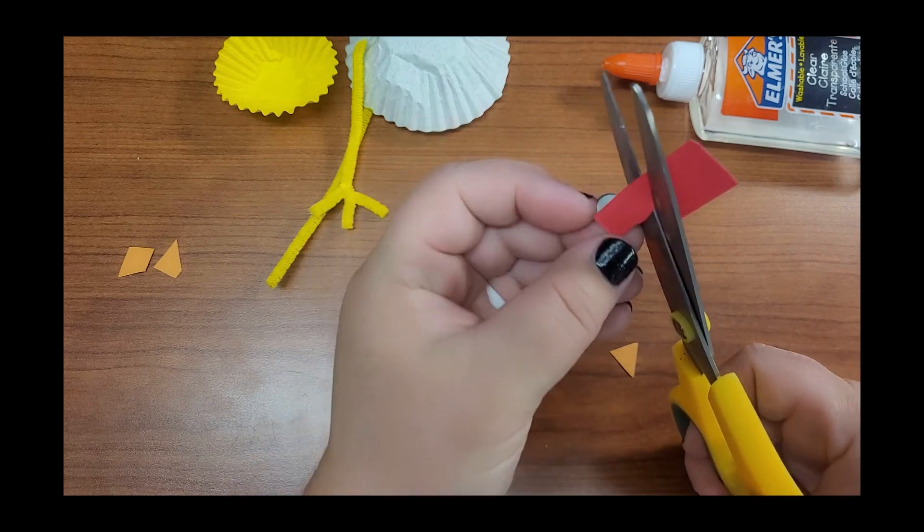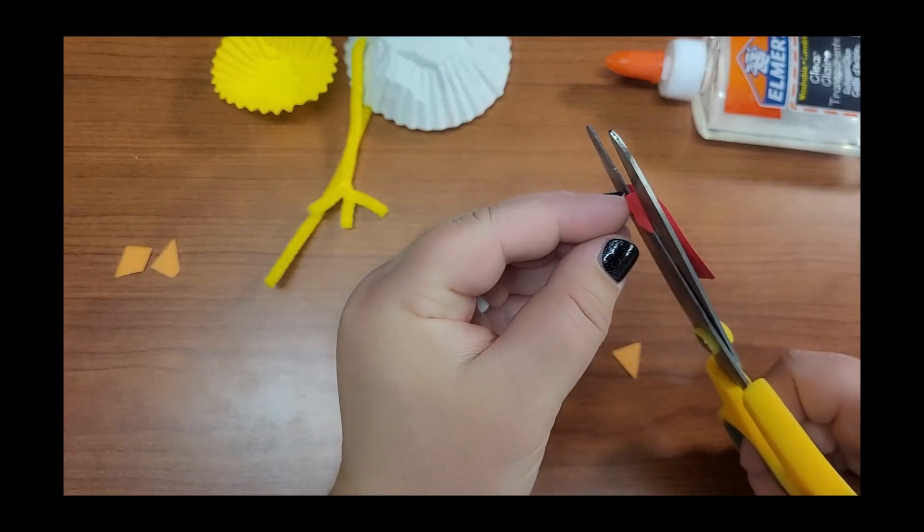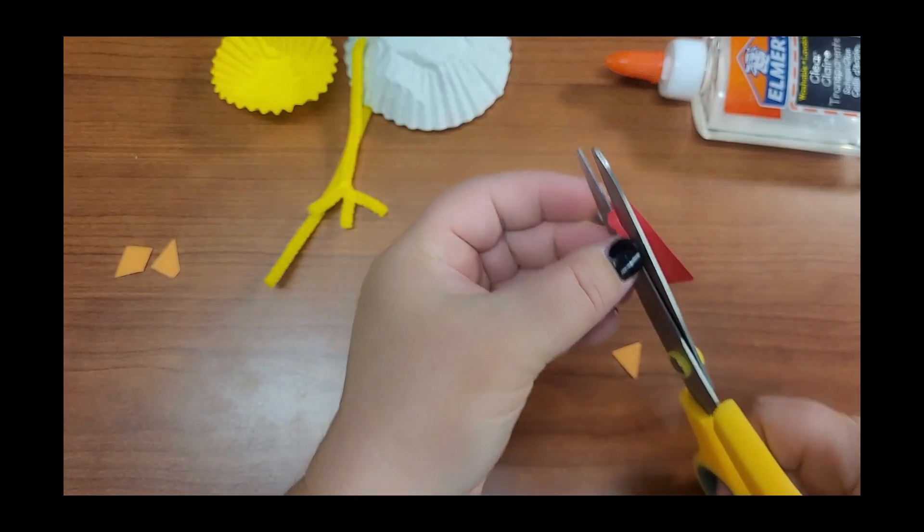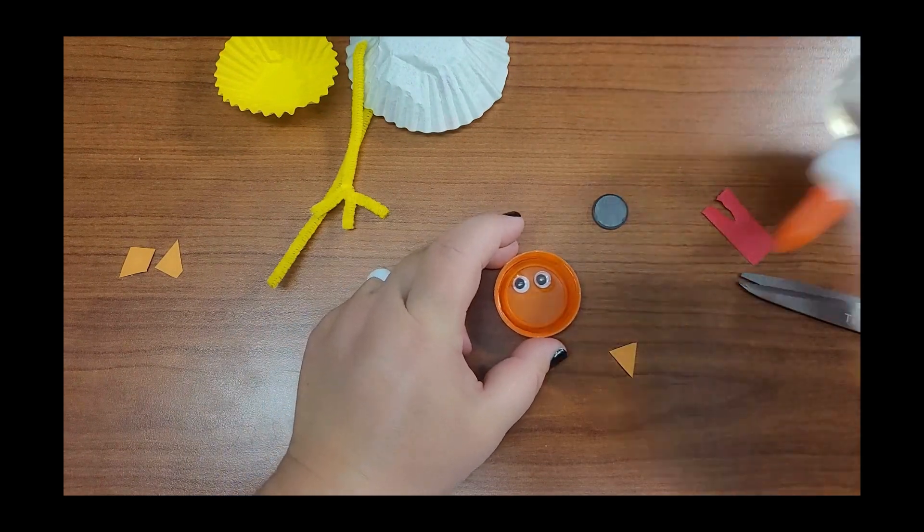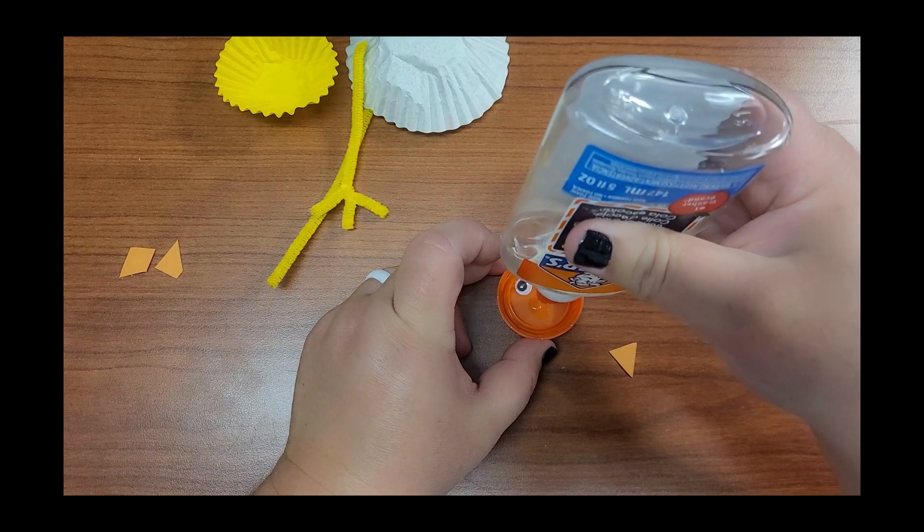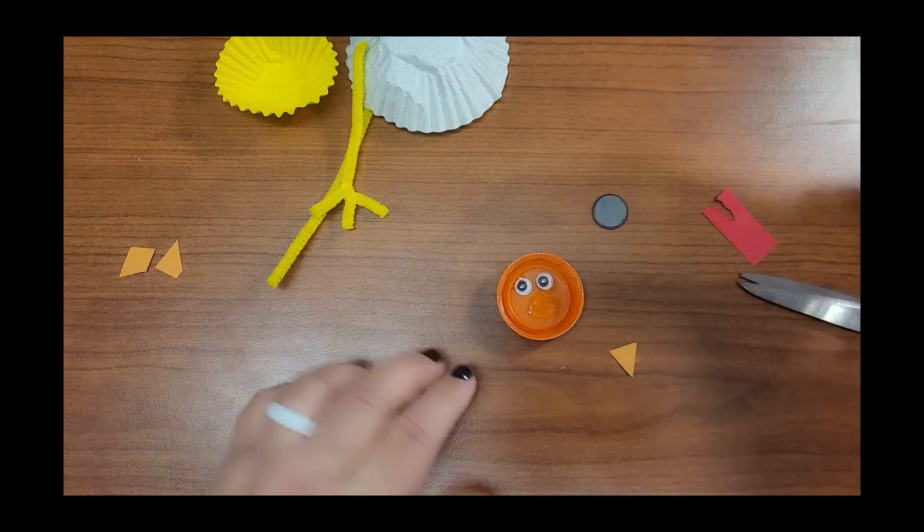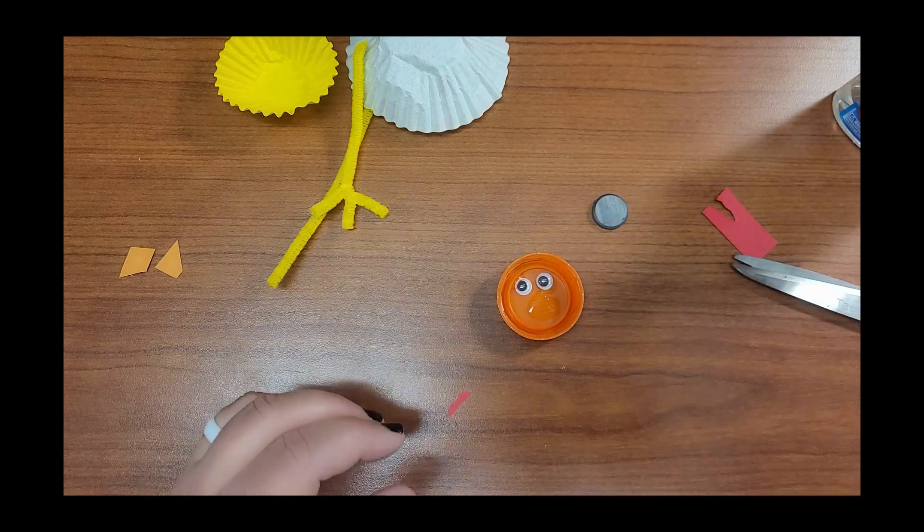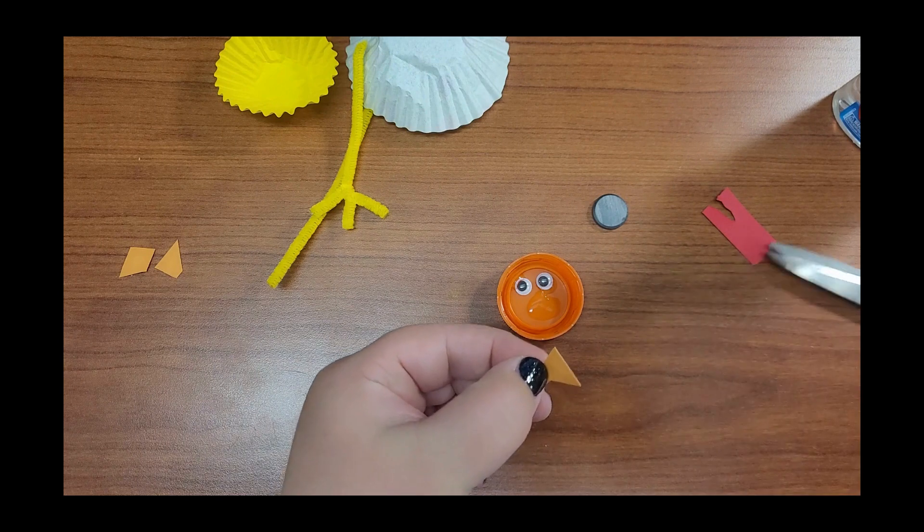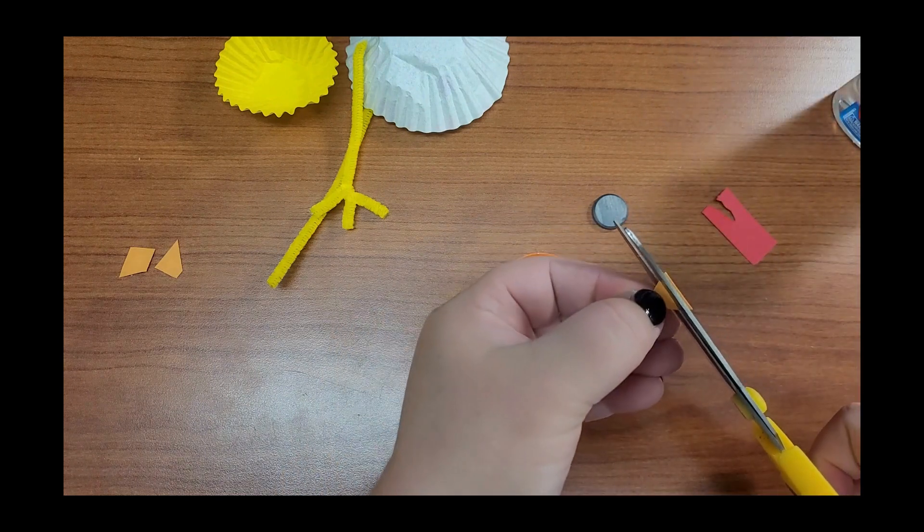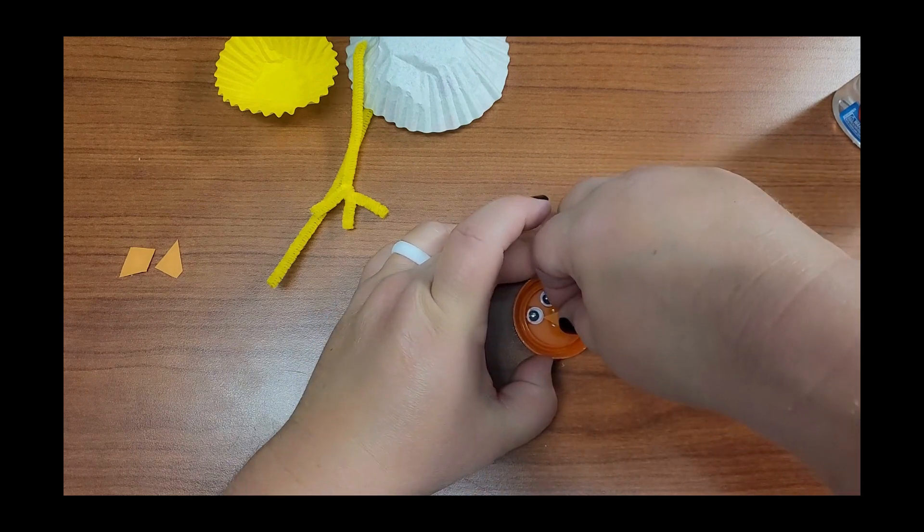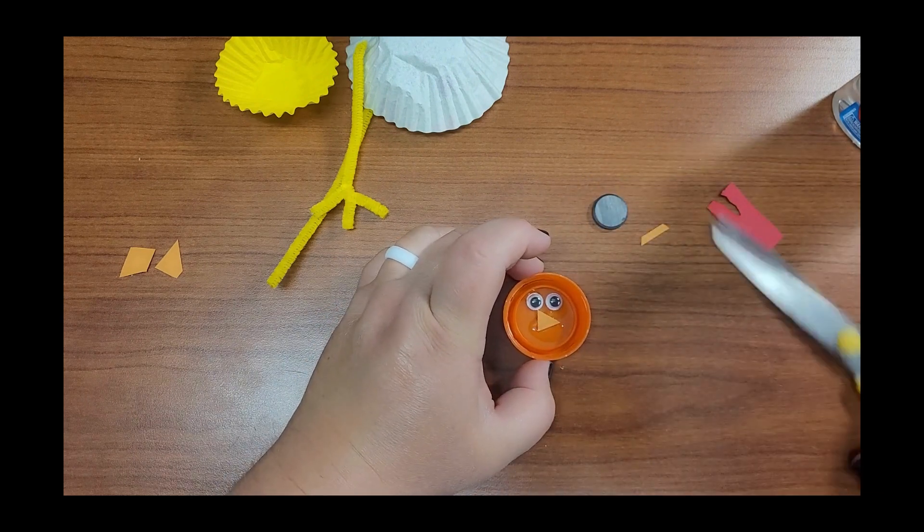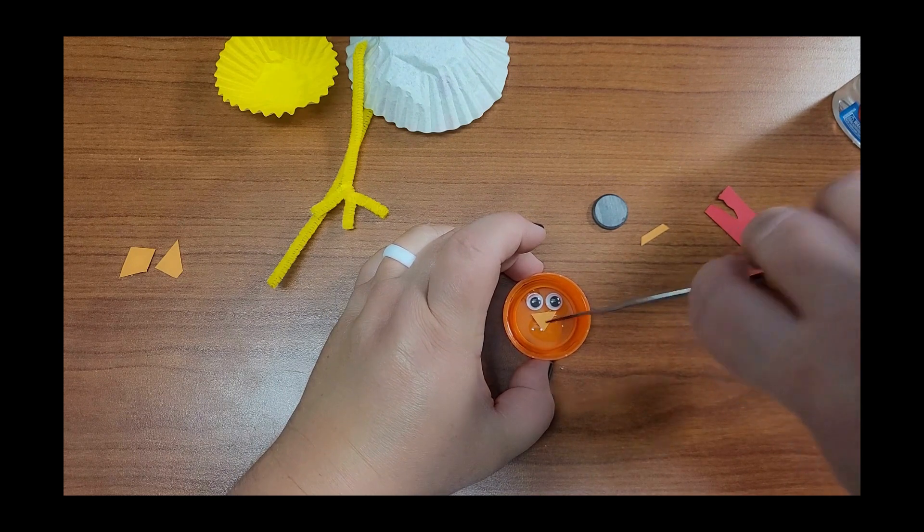And you're going to glue those under your turkey's eyes inside that Gatorade lid. You know what, I'm going to make his beak a little bit smaller. All right, there's his beak.